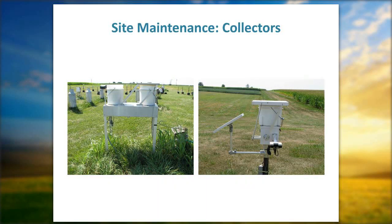Our two collectors: on the left is the AeroChem collector, a two-bucket collector. We currently have about 170 of those still in the network and are making a slow transition to the one-bucket collector called the InCon collector. The AeroChem is triggered with a grid sensor, while the InCon is triggered with an optical sensor. We'll cover the basics for both.